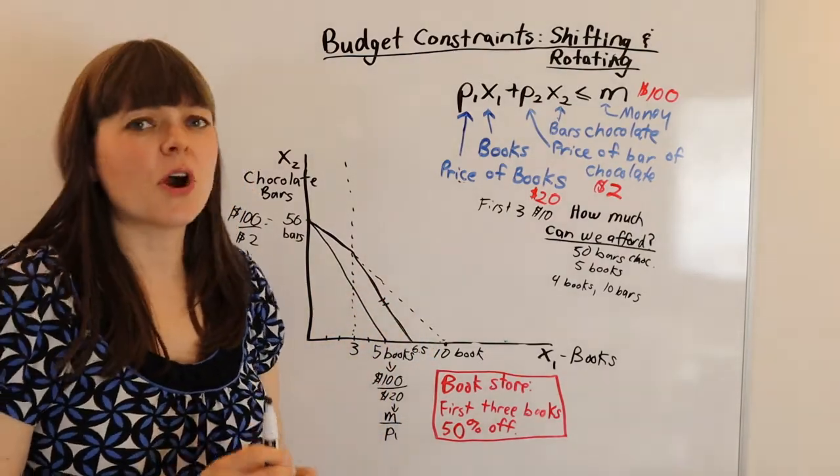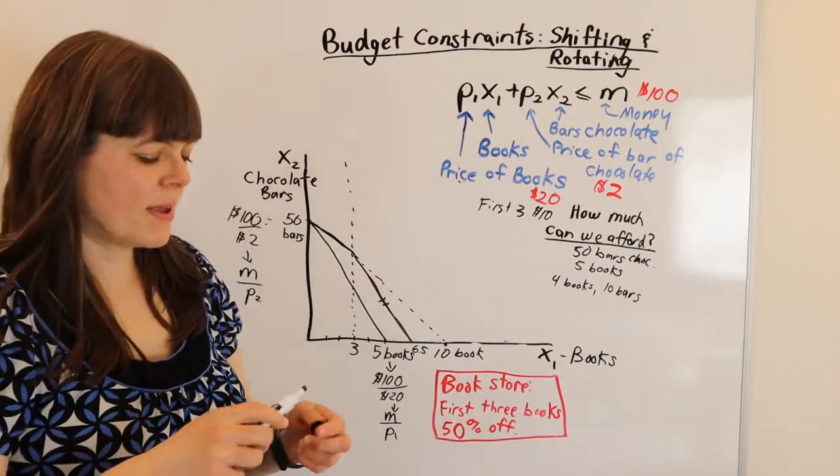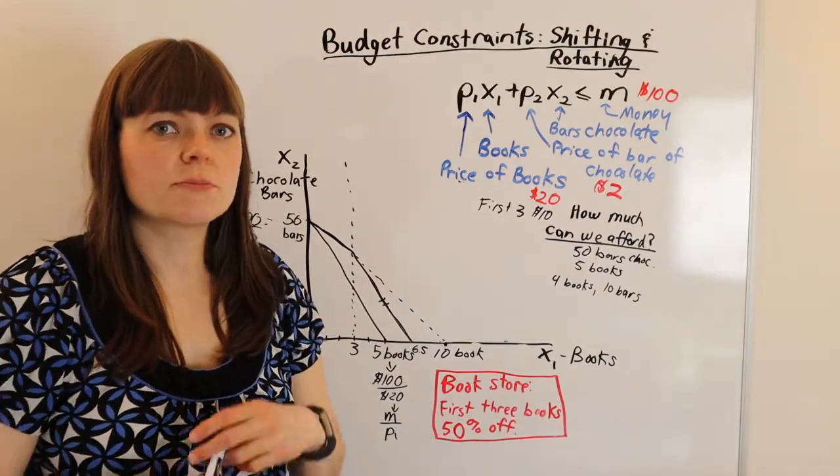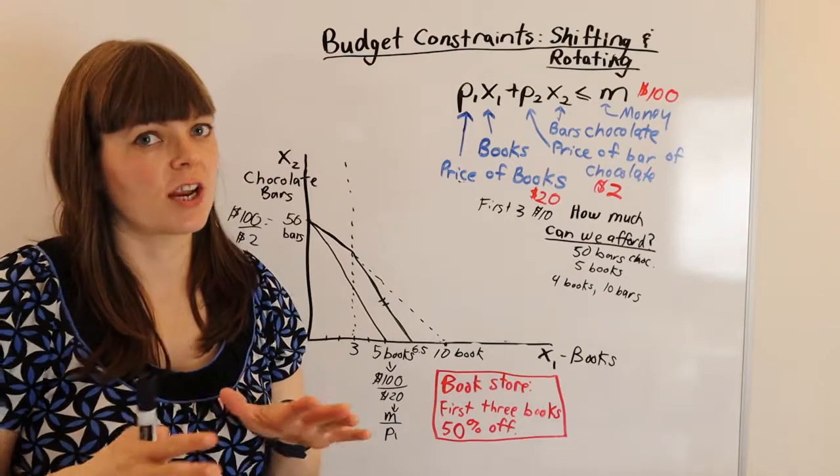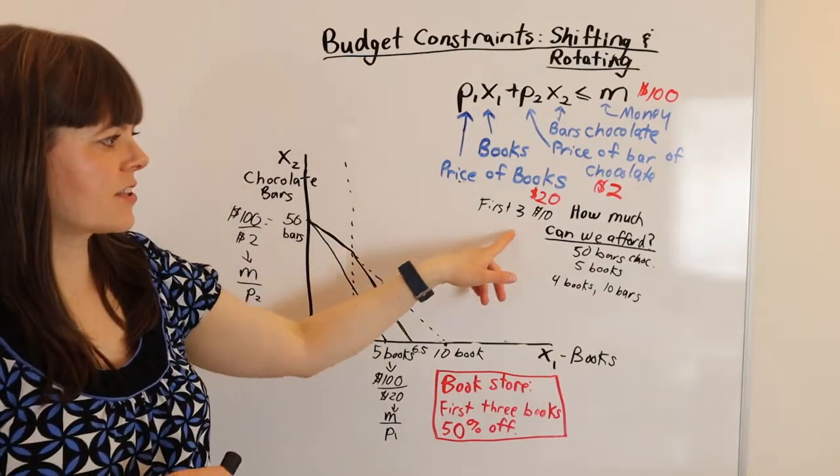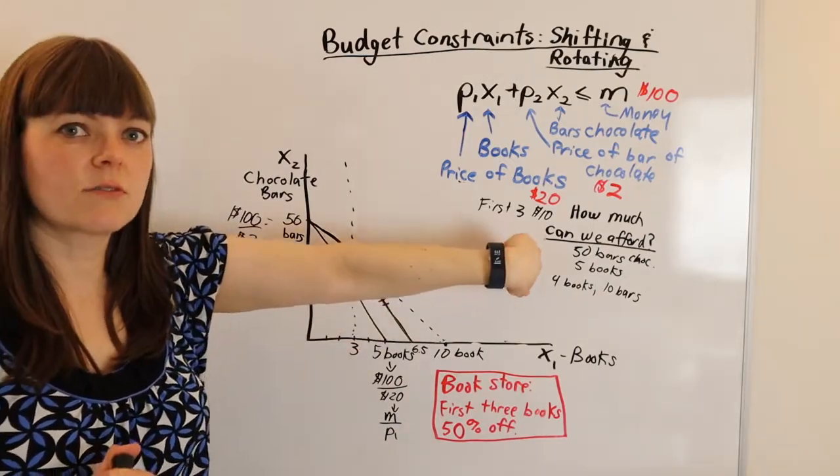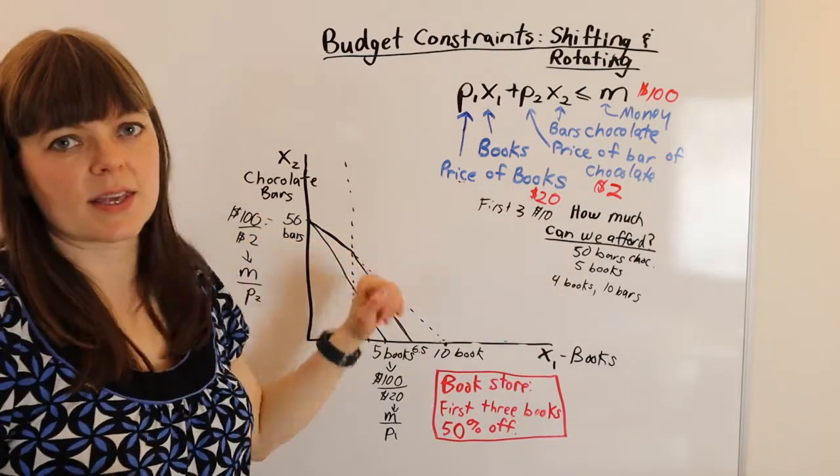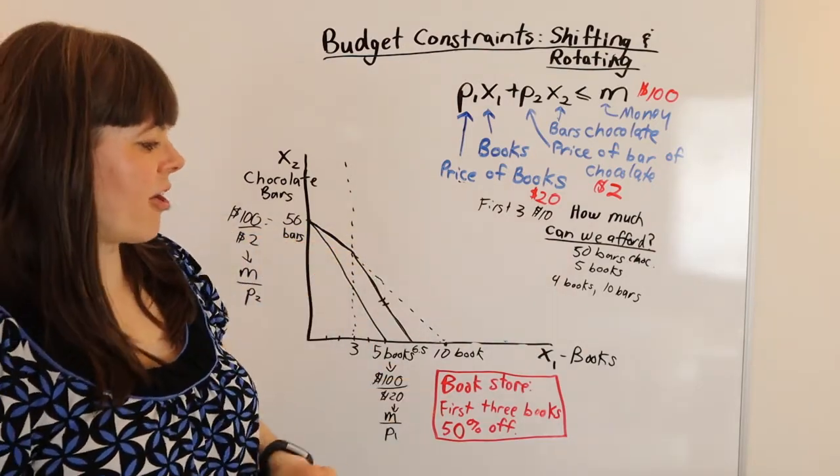Now, how do you know if there's probably going to be a kink? It's basically if the price ratios between goods ever changes. So if there's a sudden change in the price of one good, that's going to lead to a kink. And that's the main scenario.